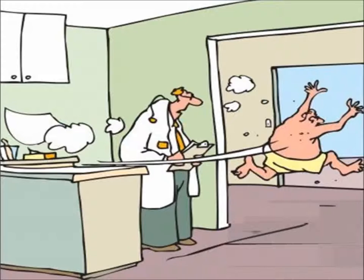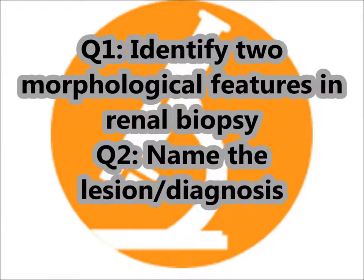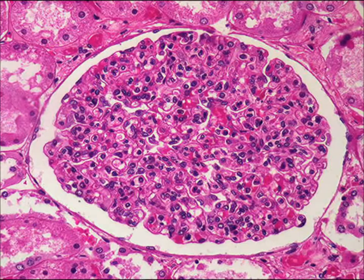The next clinical scenario is about a young girl who presented with lethargy and passing dark colored urine for the past week. She is hypertensive, there is blood in her urine and protein, and there is also a history of sore throat. The question is to identify two morphological features in the renal biopsy and name the likely diagnosis.